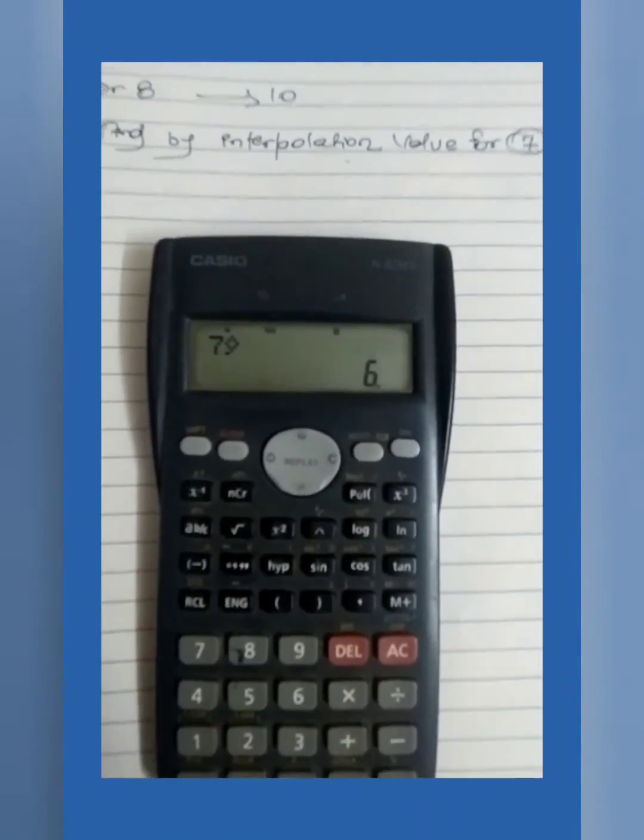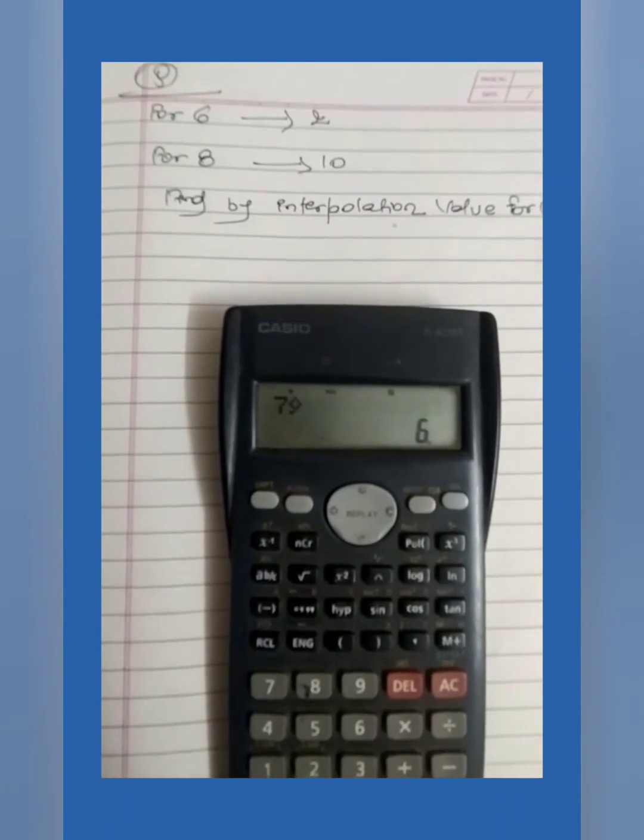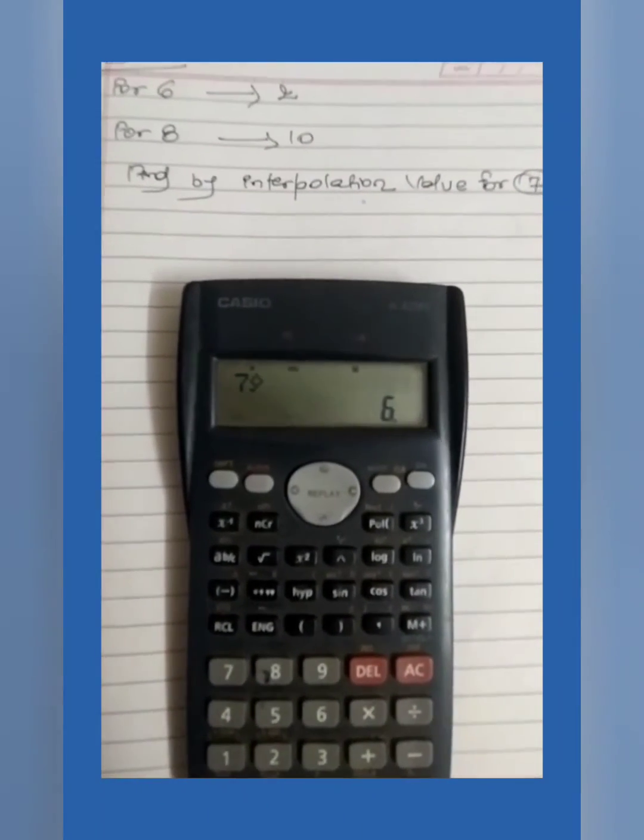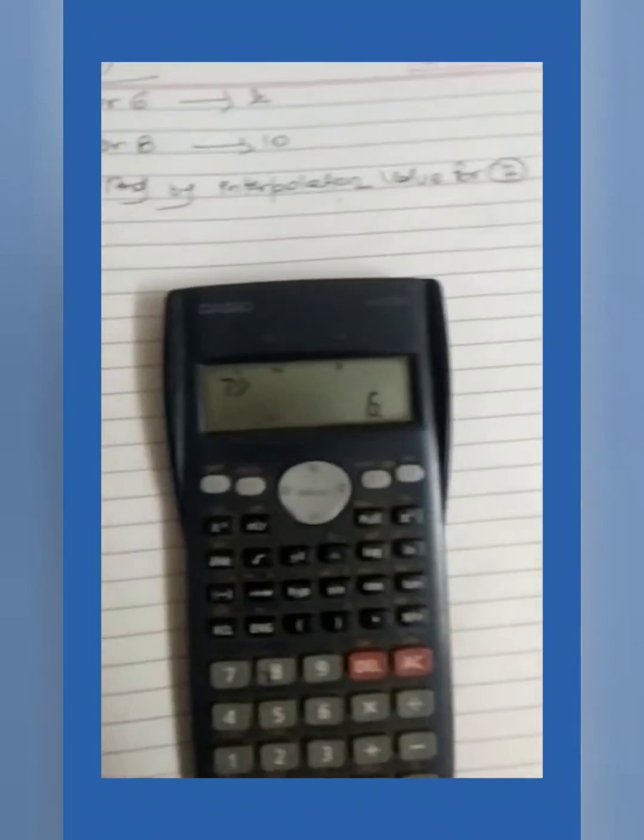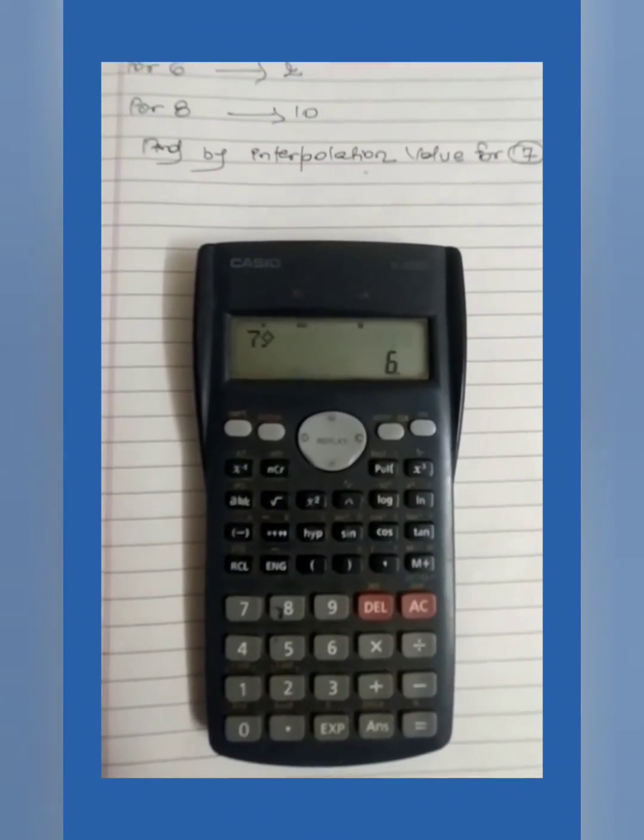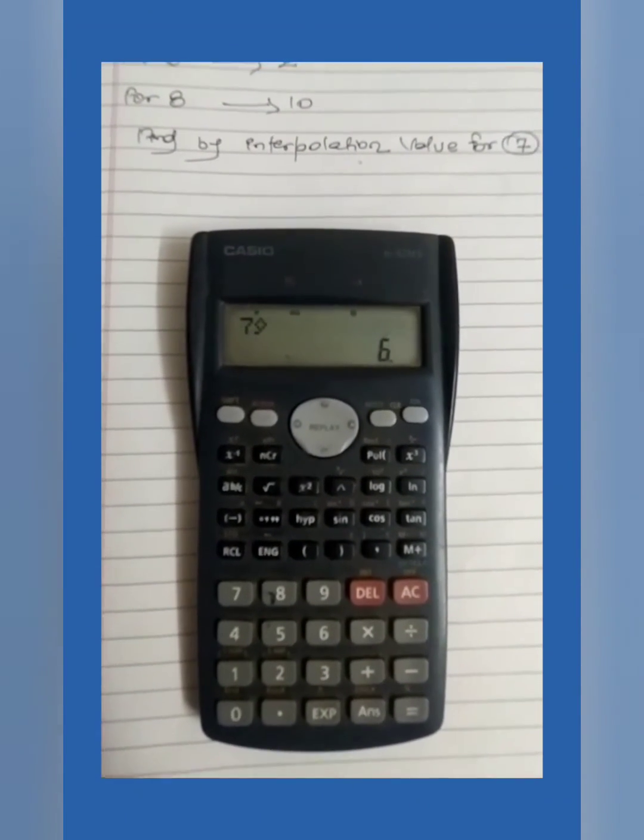So you are getting 6. So for 6 if the value is 2 and for 8 its 10, then for 7 it is 6. So this is the method you can use for interpolation.